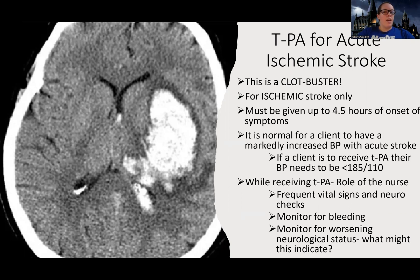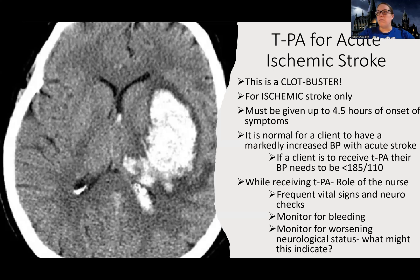TPA is a medication also known as tissue plasminogen activator — I always say it wrong, something like tissue plasminogen antigen. It doesn't really matter; we always call it TPA. You won't hear a nurse say 'please get the tissue plasminogen antigen stat' — we just say TPA. This medication is used for acute ischemic stroke.